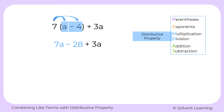Now we're left with just addition and subtraction. When we're adding and subtracting, we can only add and subtract like terms together. This is what we call combining like terms, and it's done during the addition and subtraction step of the order of operations. Let's see what like terms we have here. We have 7a and plus 3a — they're like terms because they have the same variable, a.